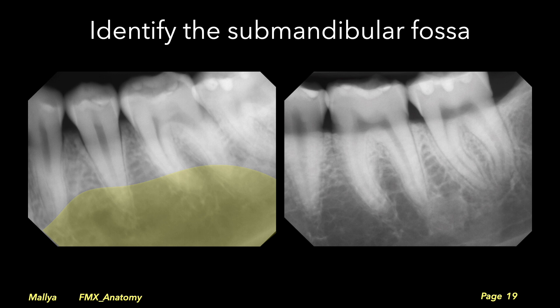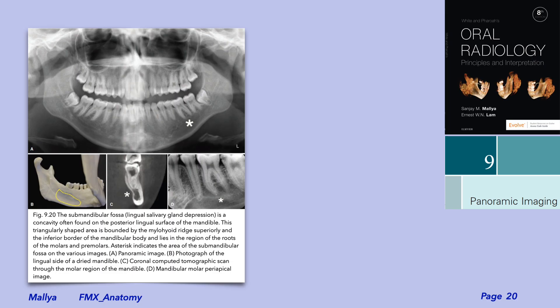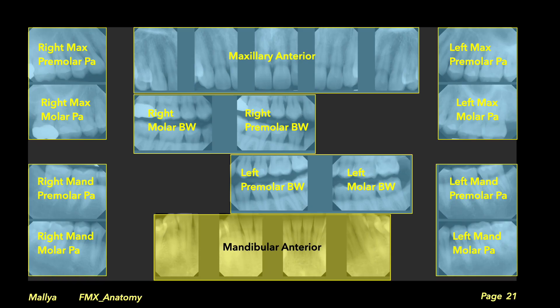Note that the trabecular bone on the inferior portion of the radiograph appears slightly more radiolucent. This is a projection of the submandibular fossa, a depression on the lingual surface of the mandible. This is an anatomic variation and can be seen on both periapical and panoramic imaging.